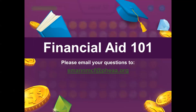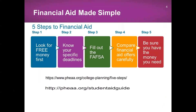Along with this PowerPoint presentation, there are two links embedded for you to use as resources. We have our student aid guide, and these five steps to financial aid is elaborated at the link below. Tonight I will discuss looking for free money, the importance of knowing school-specific deadlines, filling out the FAFSA, how to compare your financial aid offers, and how to make sure you have the money you need for your financial future.